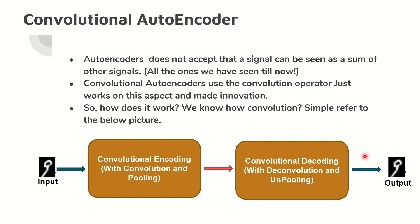The final type in this session is the convolutional autoencoder. We have seen enough of CNNs and CNN models. Previously, the concept that a signal can be seen as a sum of other signals — the convolution aspect — was never accepted into autoencoders. But with the evolution of convolutional autoencoders, this previous myth was broken, making it an innovation.